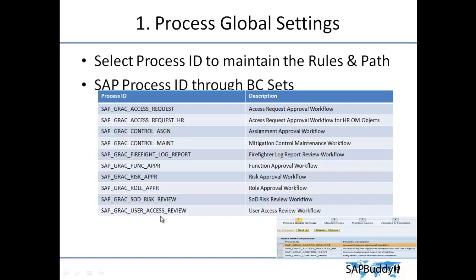Then GRAC Access Review Request — when you trigger the access review, all workflows and notifications related to it can be defined in this process ID. As you can see, all the major scenarios used in a typical implementation are already delivered by SAP. You can modify these scenarios or create a new process ID of your own if required. Let me show you this in the system.